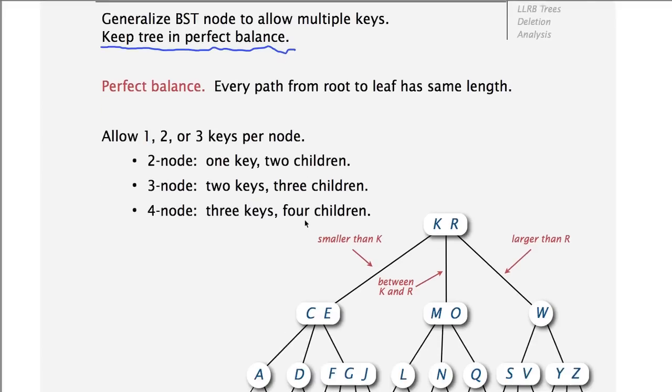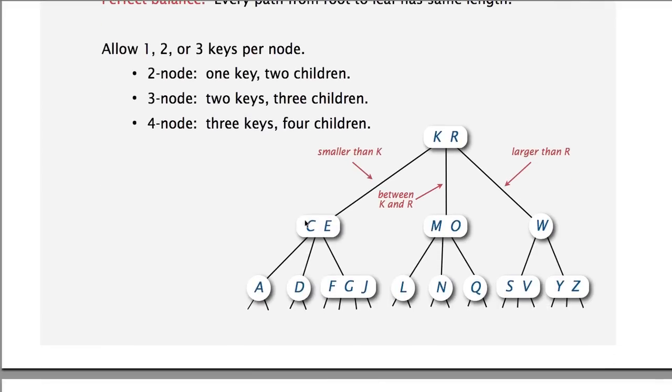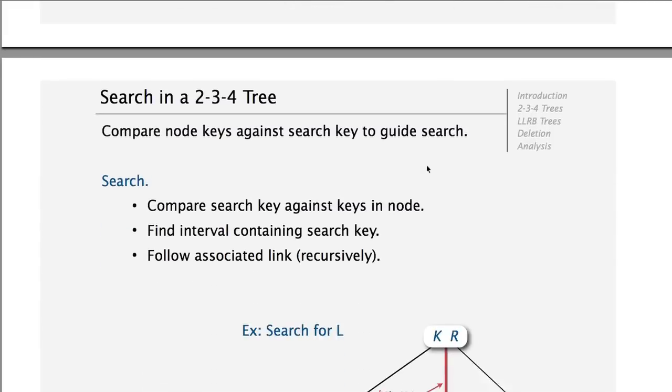So here is an example. Here we have the root node is K and R. So if an element comes in, if it's smaller than K, then it goes here. If it is between K and R, it goes here. And if it is larger than R, it goes here. And so on.